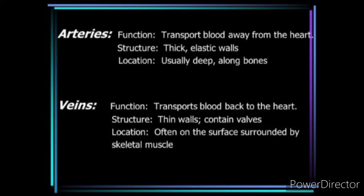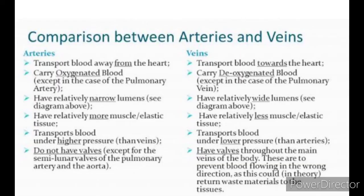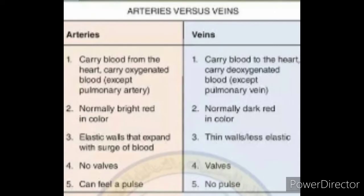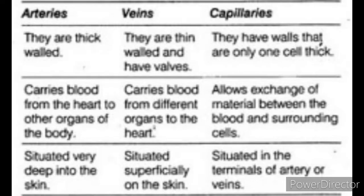Why are arteries made up of thick muscular walls? This is a repeated board exam question. Since all arteries are emerging out from the heart, they have to withstand the pressure of blood — that is why all arteries are made up of thick muscular walls. All arteries carry pure or oxygenated blood, except the pulmonary artery, and they take oxygenated blood from the heart to different parts of the body. Arteries have no valves.